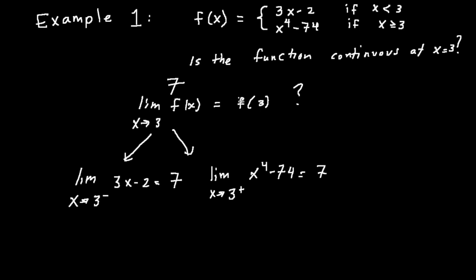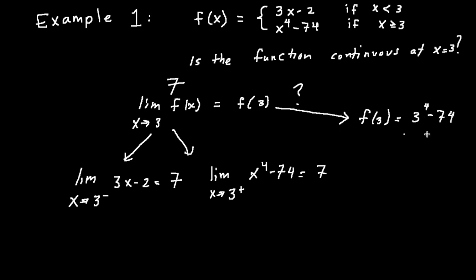Now let's compare that to what happens when you plug in three — what is f of three? At x equals three, the function looks like x to the fourth minus 74, so f of three equals three to the fourth minus 74, which is also equal to seven. The limit is seven and the function value is seven at x equals three, so this function is continuous.